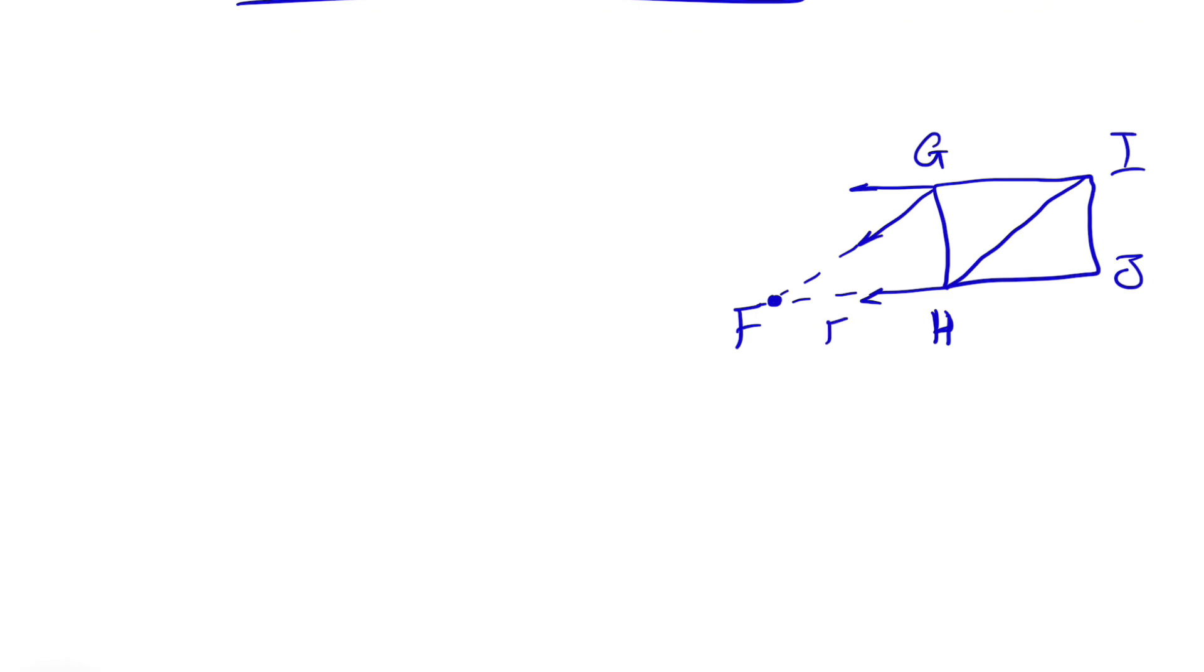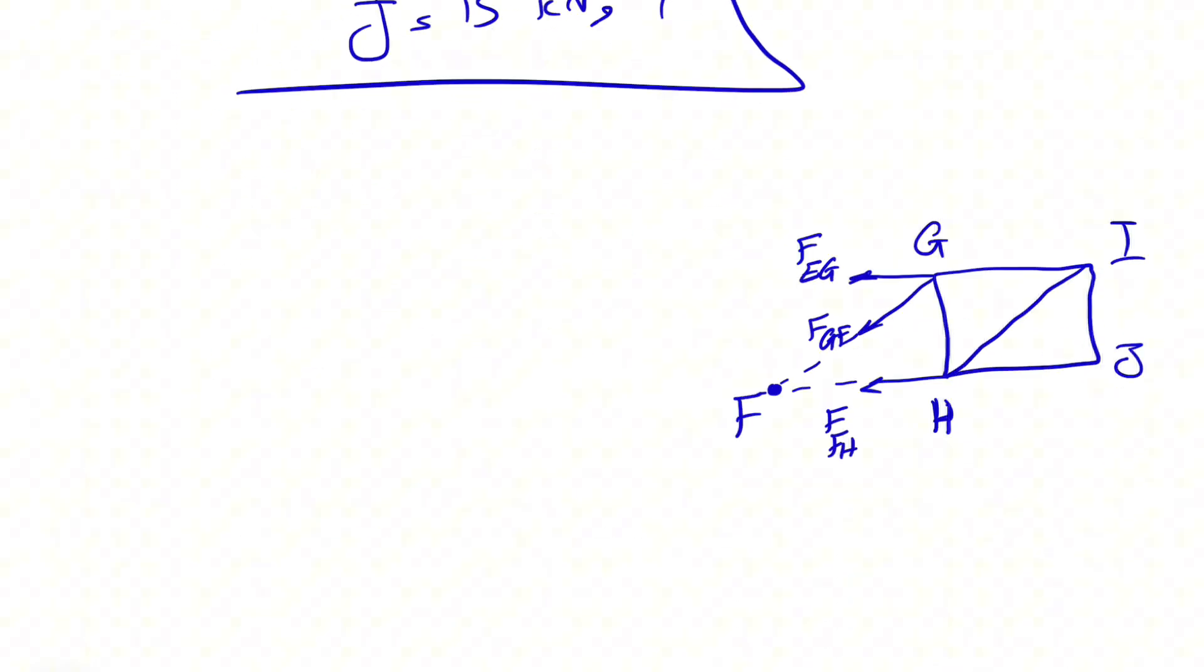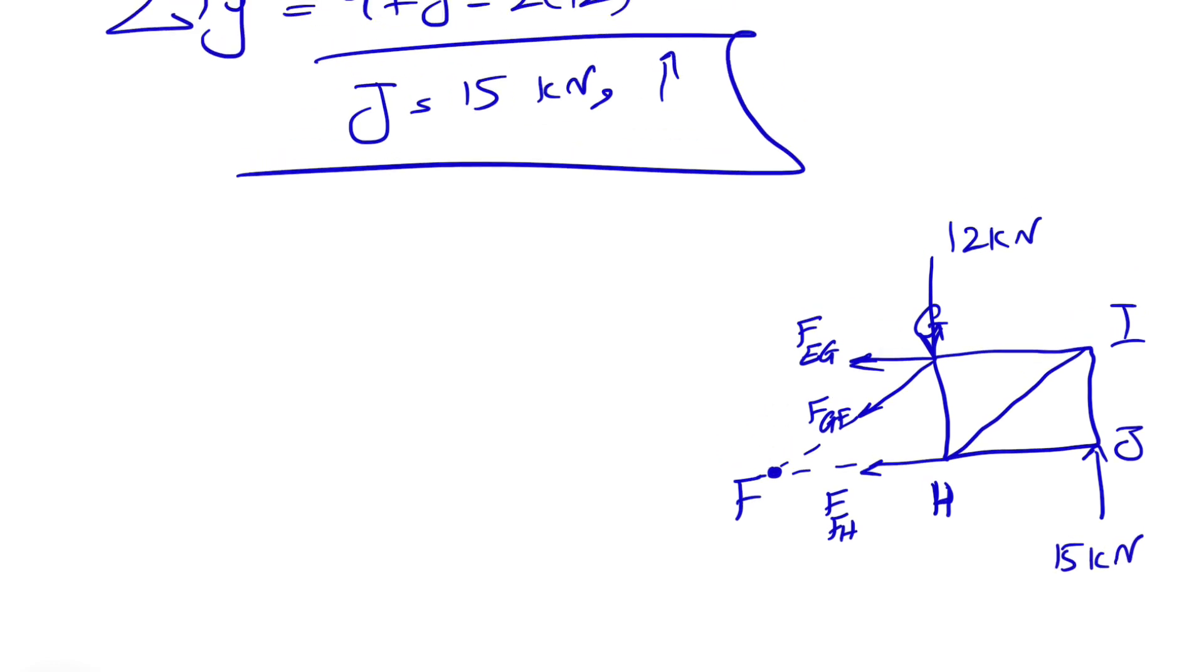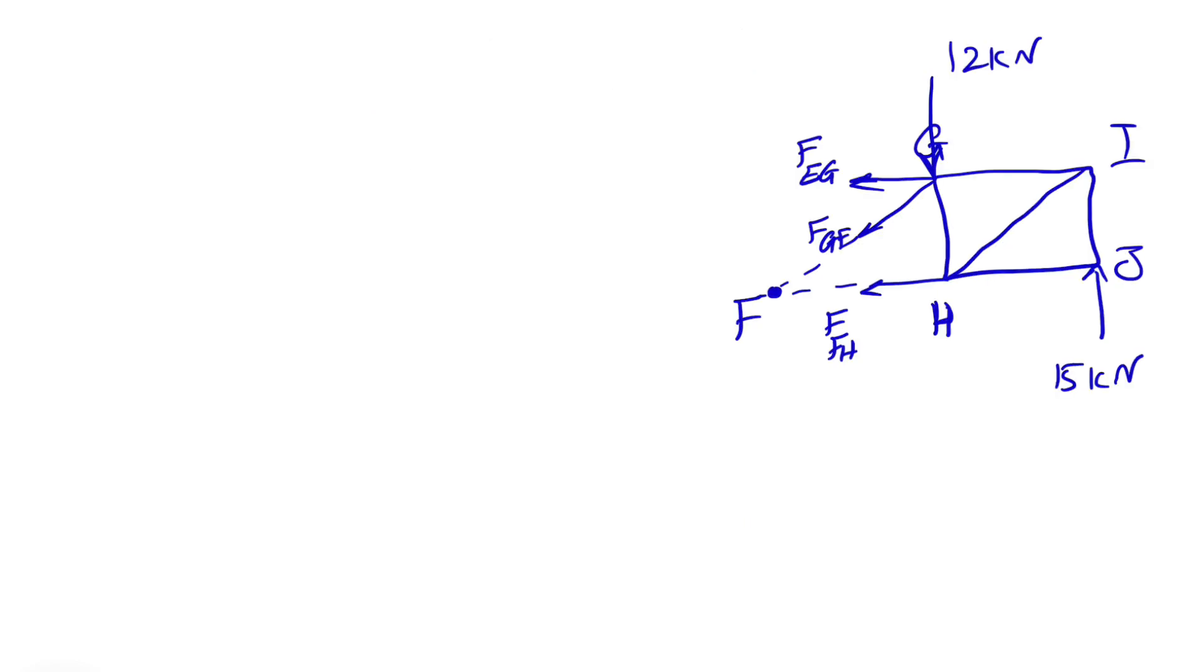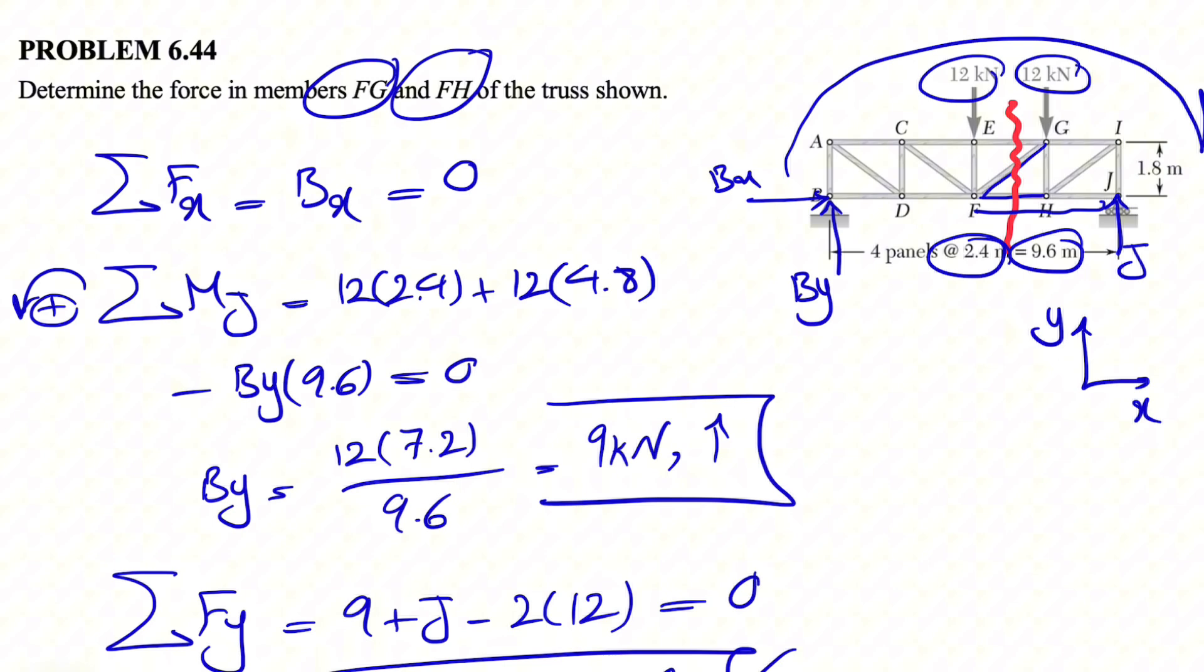So here we have the member, the force in member FH. Here would be the member in GF, and this one would be the force in member EG. Again, I just assume this direction for now in each of these forces. If we get the negative sign at the end, that shows that the assumption was not correct. We also have 1 12 kN at G, and we figured out that the force at J is 15 kN from the previous system. So we can do the same thing. If we look at the Y component, we'll see that the only force in Y component that has Y component from the unknowns that we have is FGF. But in order to find the Y component of FGF, we need some information about maybe this angle in here. Let's get back to the truss, see how we can figure that one out.